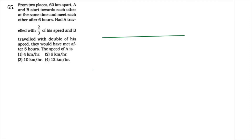In this question, it is saying that from two places 60 km apart, A and B start towards each other at the same time and meet after 6 hours. Had A traveled with two-thirds of his speed and B traveled with double of his speed, they would have met after 5 hours.